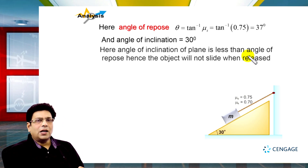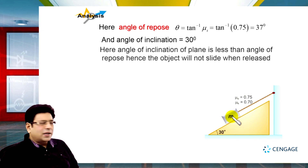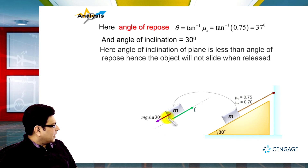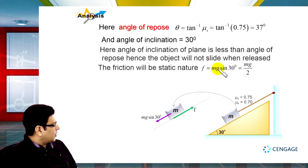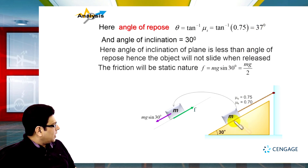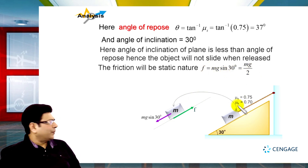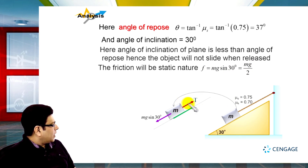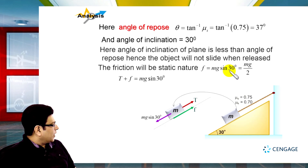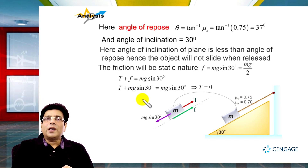When released, the object will not slide, so it will remain in equilibrium with static friction. Drawing the free body diagram: mg sin 30° acts down the incline, while friction force f and tension T act up the incline. Static friction f = mg sin 30° = mg/2. For equilibrium: T + f = mg sin 30°. Substituting f = mg sin 30°, the two terms cancel and T = 0. Therefore, the tension in the string will be zero.